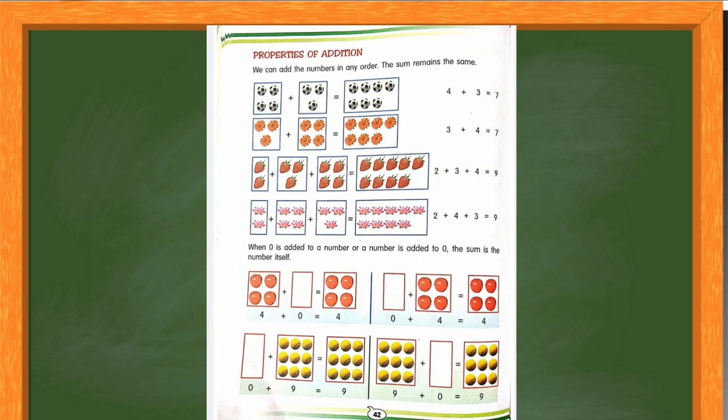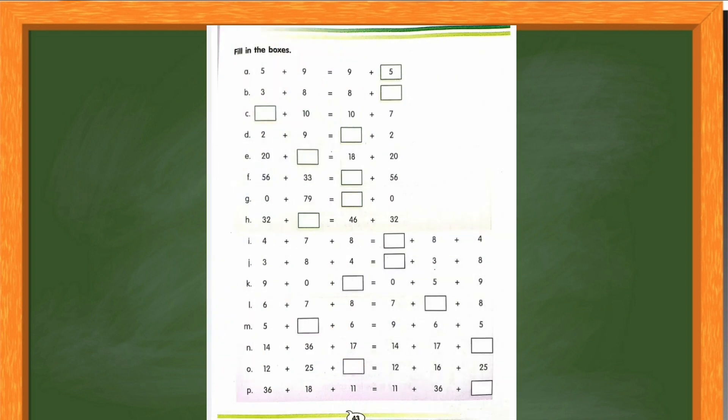Now moving on to page number 42. You have properties of addition. We have already done properties of addition. So I hope you have understood. We have two properties of addition. Now coming on to page 43. See, there is fill in the boxes based on the properties of addition. So it's very easy. We have already done in the notebook. And this you have to do in the book.